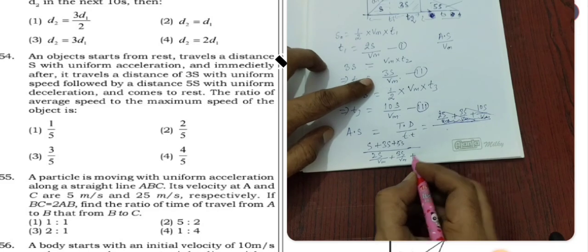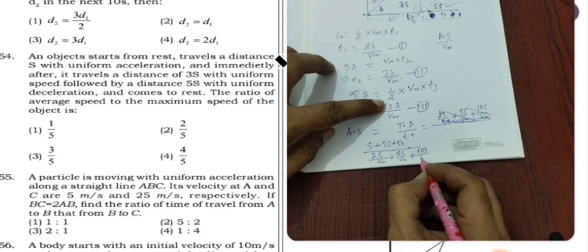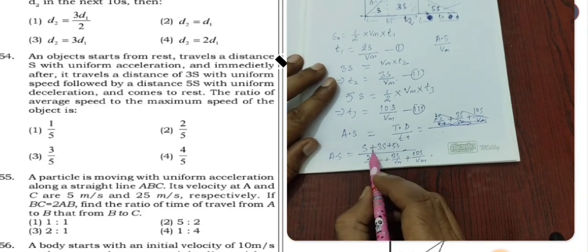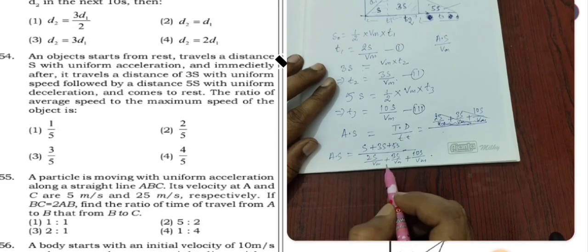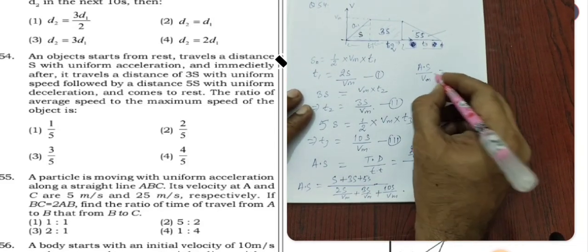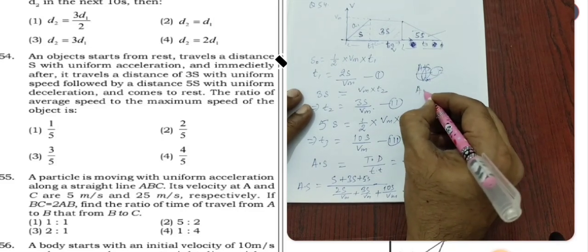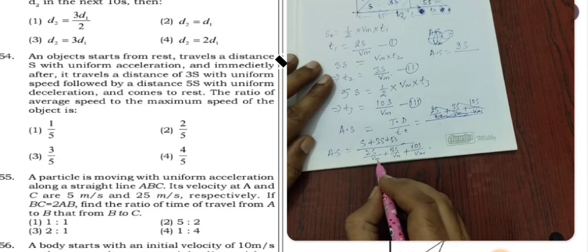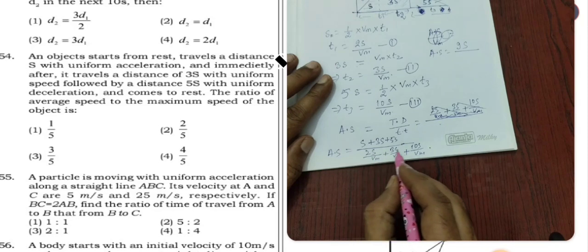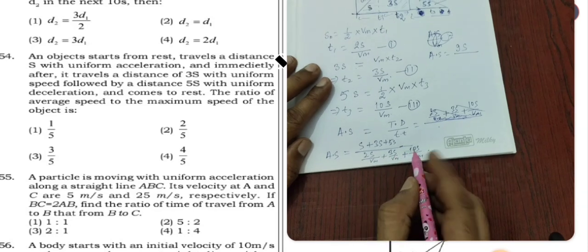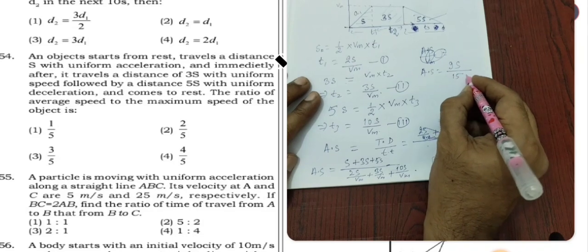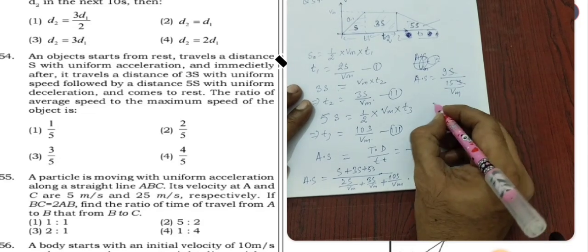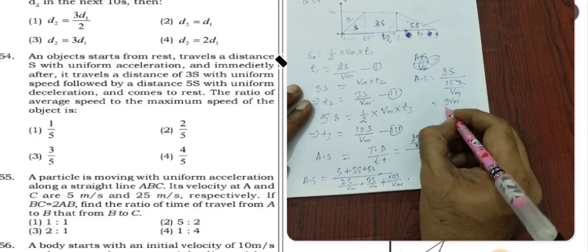So our average speed is 9S divided by total time 15S by Vm. This S will cancel. This is 9Vm divided by 15, which simplifies to 3Vm by 5.